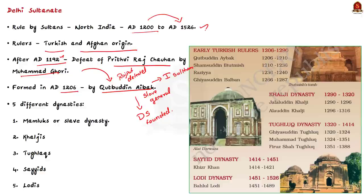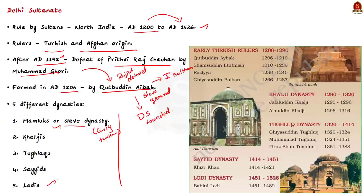During this period, five different dynasties ruled Delhi. First is the Mamluks, popularly known as the slave dynasty. Then came the Khaljis, then the Tuklaks, then the Syids, and finally Delhi Sultanate came to an end with the Lothis. All these dynasties are collectively referred to as the Delhi Sultanate.